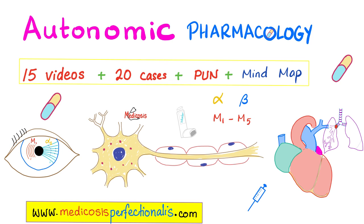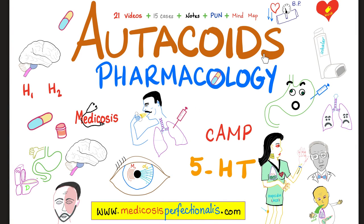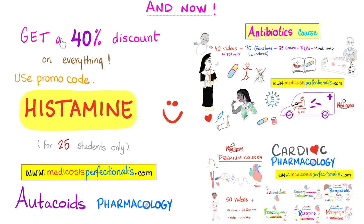If you like this video, you will love my autonomic pharmacology course on my website. I also have a CNS pharmacology course talking about all of these topics. And Autacoids pharmacology course talking about the cyclic AMP, the histamine, the serotonin, treatment of peptic ulcer disease, etc. And for a limited time, you can get a 40% discount towards anything on my website. Just use promo code histamine for a limited time only at medicosisperfectionalis.com.